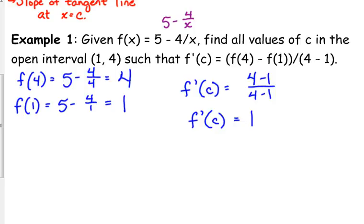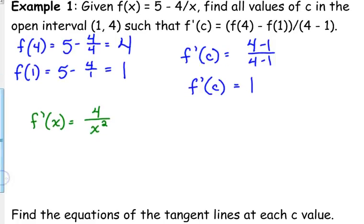So, let's take the derivative. f prime of x. The derivative of 5 is 0. The derivative of negative 4 over x would be positive 4 over x squared. I kind of skipped some steps there, but I think we're getting used to that one. That would be 4x to the negative 1. So, bring down the negative 1, makes it positive, subtract 1 from the negative 1, x to the negative 2 puts it in the denominator. So, that's our derivative. The question is, where is this equal to 1?